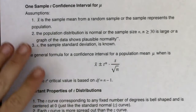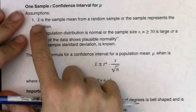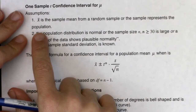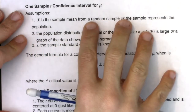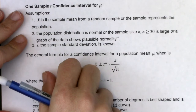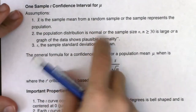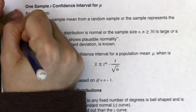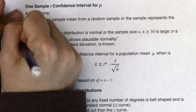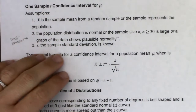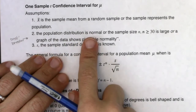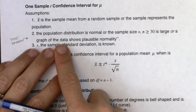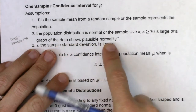For any confidence interval you start with your assumptions. The sample mean is from a random sample or the sample represents your population — same idea as when we were doing z confidence intervals for proportions. Now this is the deal breaker: normality. This gets us on the t-distribution. The population distribution is stated to be normal, or the sample size is at least 30, or the graph of the data shows plausible normality.